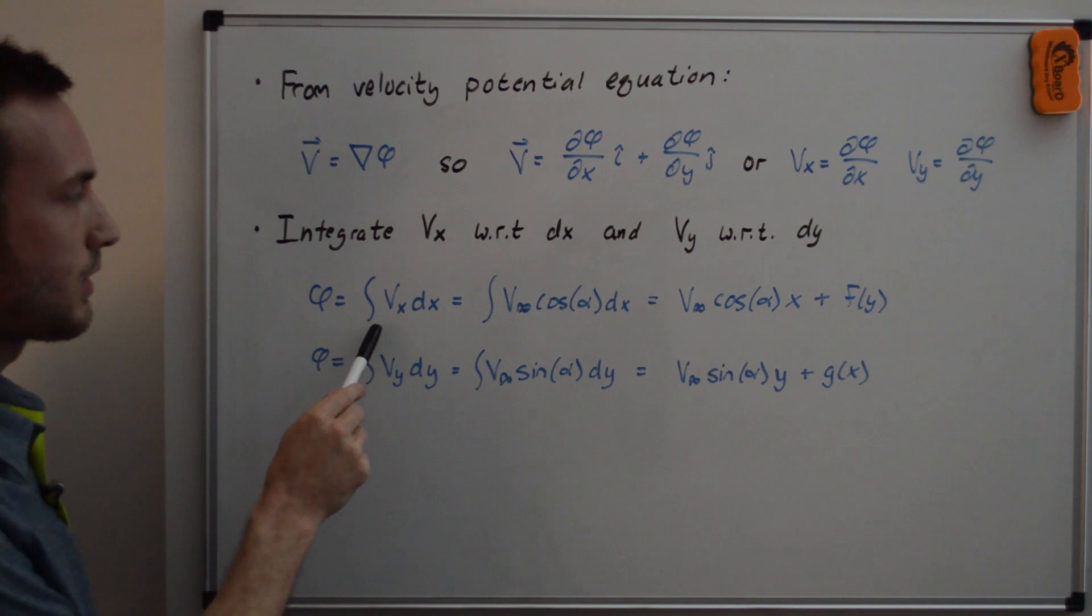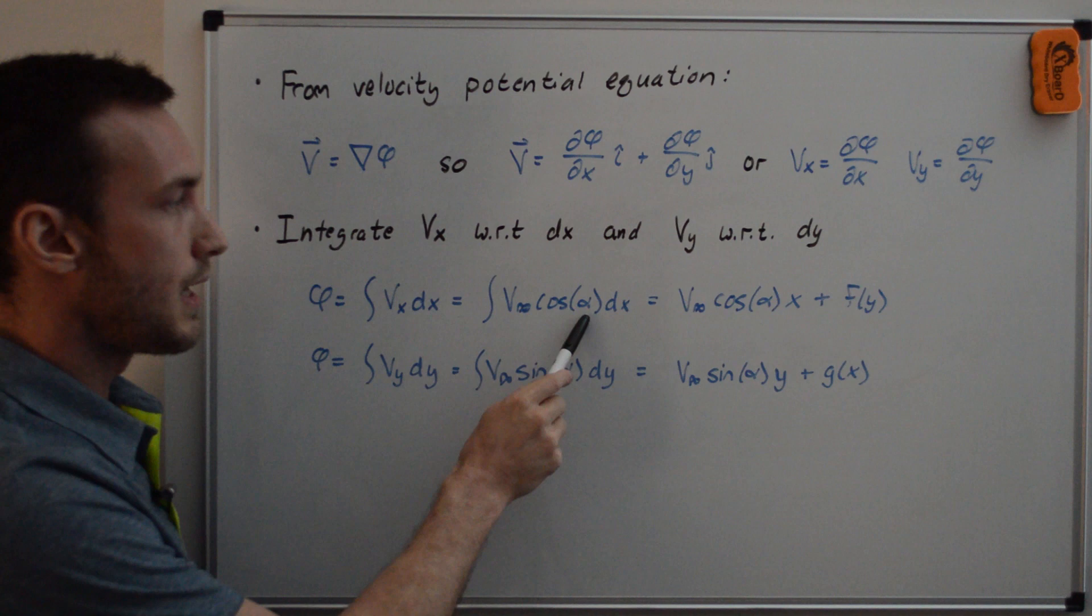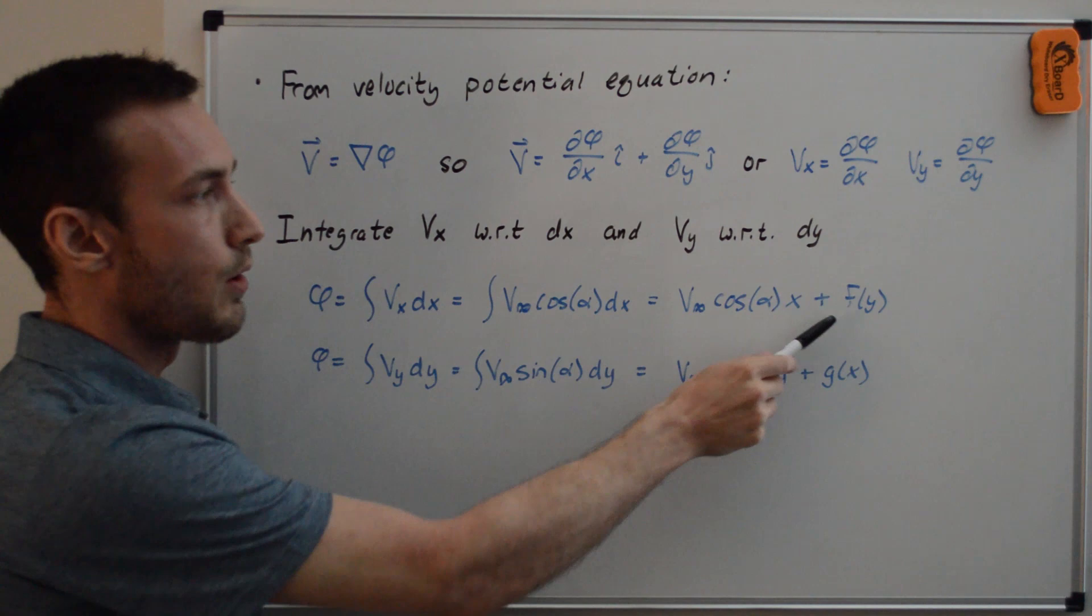So the first step is integral vx dx, and we just plug in from the previous whiteboard vx, which was v infinity cosine alpha, and we still have the dx here. And if we integrate that, because v infinity and alpha are both constants, all we have is v infinity cosine alpha x, and we are adding some function of y.